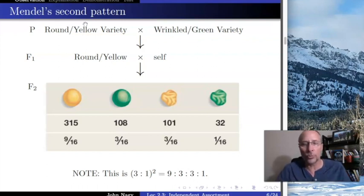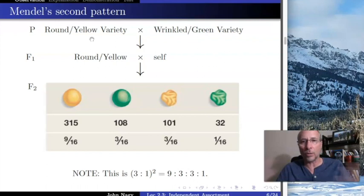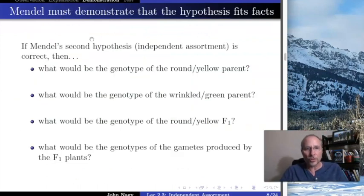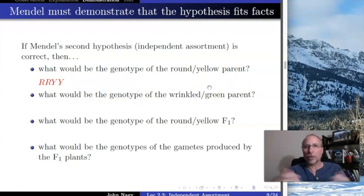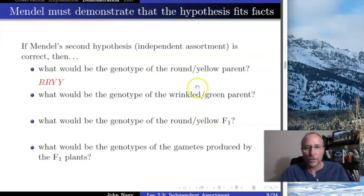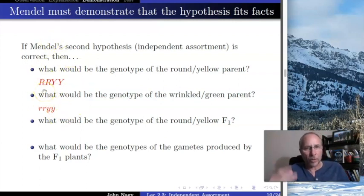But remember, before he started his experiment, he made sure all of his original plants were true breeding — he planted them and went through generations testing for true breeding. Therefore they must be homozygous, because if any were heterozygous he would have gotten some that were not true breeding and would have thrown them out. So he knows that the round yellow parent has to be big R big R big Y big Y, and the wrinkled green parent — also tested to be true breeding — has to be little r little r little y little y.